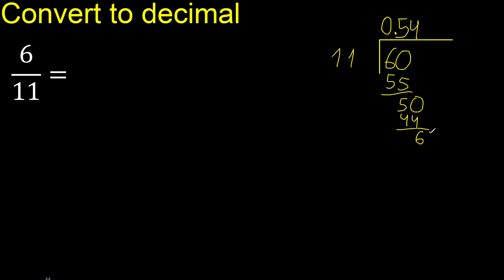Next, always complete with 0. Point is here, 60. 11 multiplied by 5 is 55, subtract. Complete. 11 multiplied by 4 is 44, subtract.